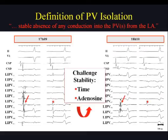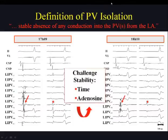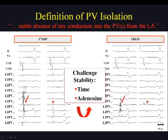Here is an example of the effect of waiting time at 5 o'clock in the afternoon. This left inferior pulmonary vein is isolated, as you can appreciate from the recordings of the circular mapping catheter, but one hour later, there is reappearance of sharp pulmonary vein potentials, indicating that additional ablation is required.